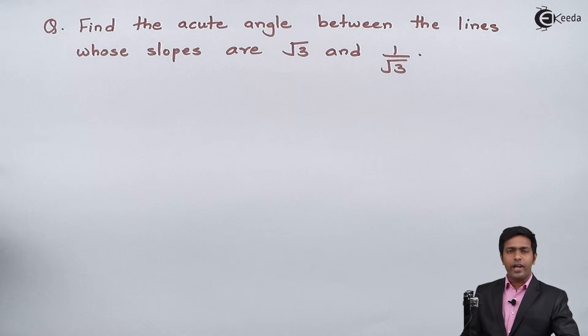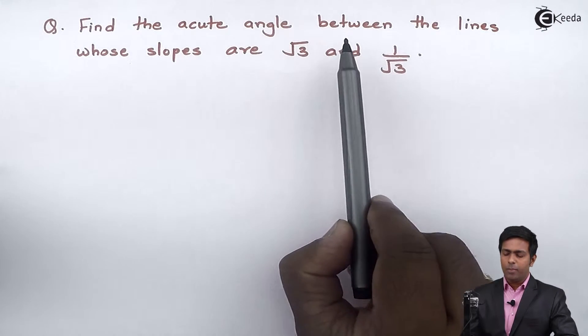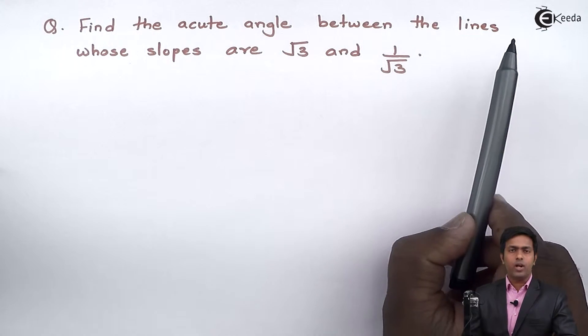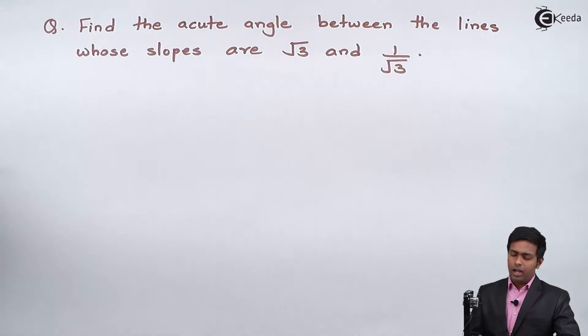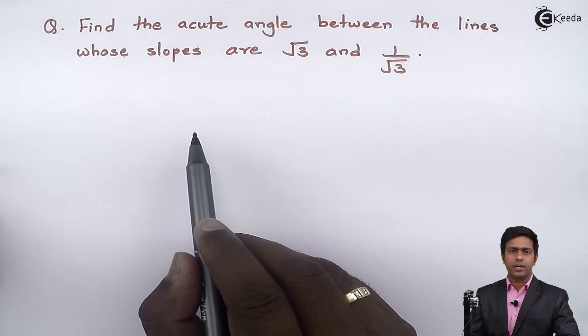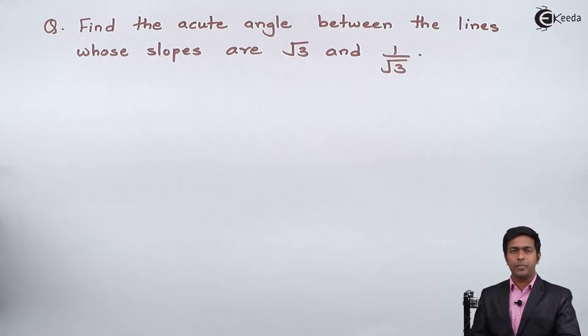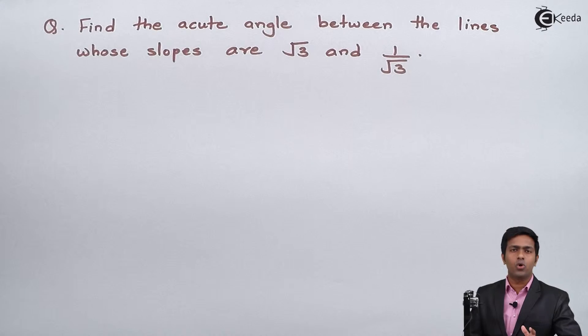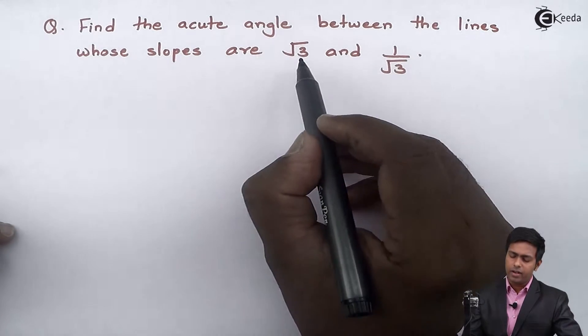To find the acute angle between any two lines, we have a formula: tan θ = |m₁ - m₂| / (1 + m₁m₂). We are going to use this formula where m₁ and m₂ are the slopes, which are already given in the question.